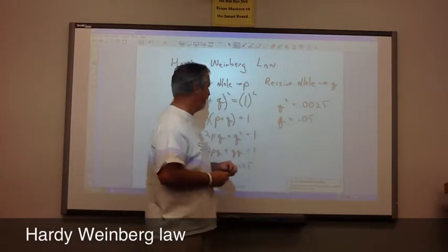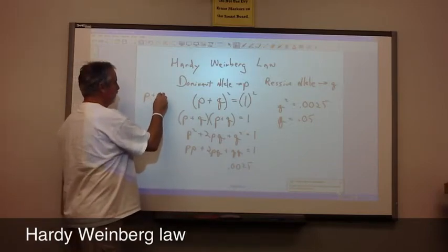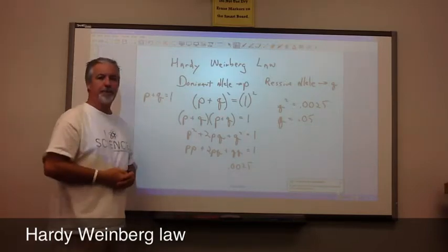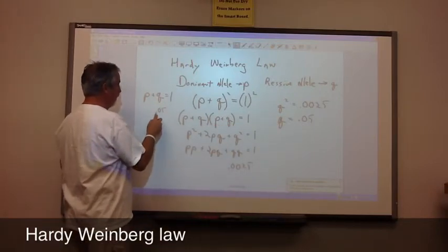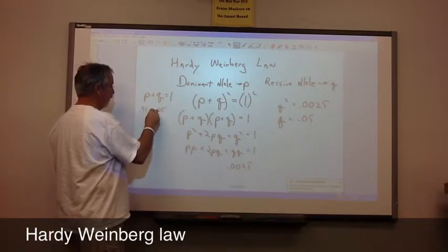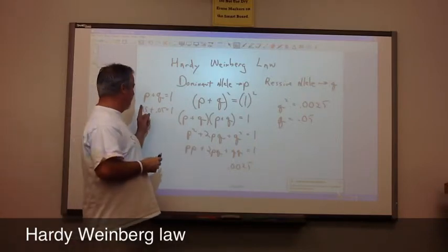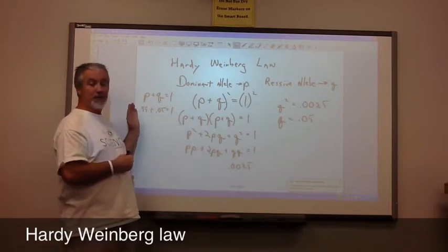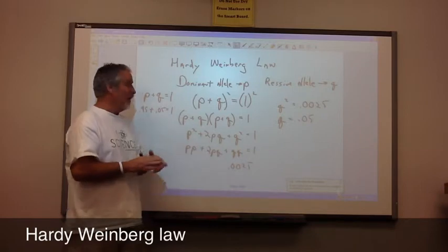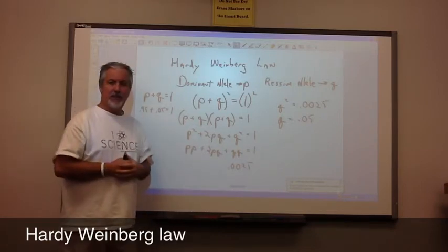Now, what that means is this. Originally, we said p plus q equals 1. We've now determined what q is. q is 0.05, so p has to be 0.95. So 95% of the population is walking around, or 95% of the genes out there are dominant genes. 5% of the genes are q.